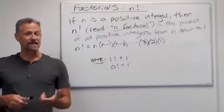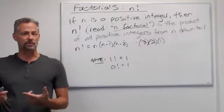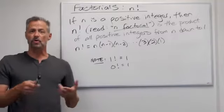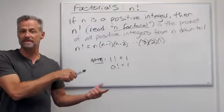If n is a positive integer, then n factorial is the product of all positive integers from n down to 1. So n factorial is n times n minus 1 times n minus 2, on and on, down to 3 times 2 times 1.